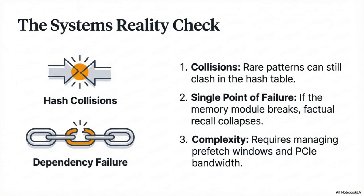Finally, systems complexity. Offloading to DRAM sounds great but requires serious systems engineering — managing prefetch windows, caching, and PCIe bus bandwidth. The practical failure case engineers will recognize: the model got dumber when the PCIe bus was busy. You're trading VRAM constraints for IO dependencies.